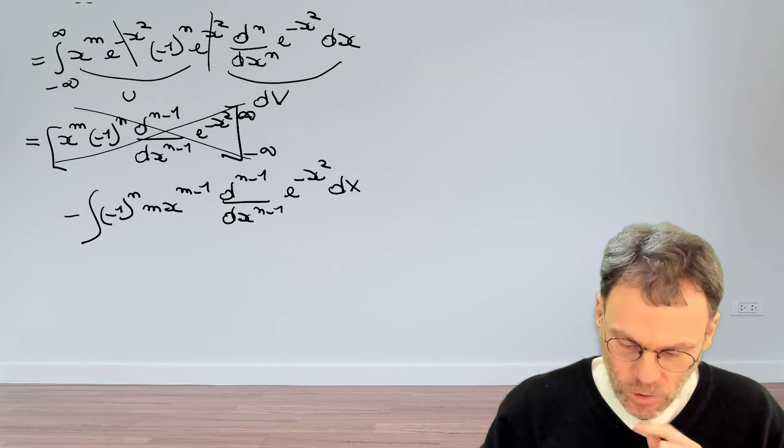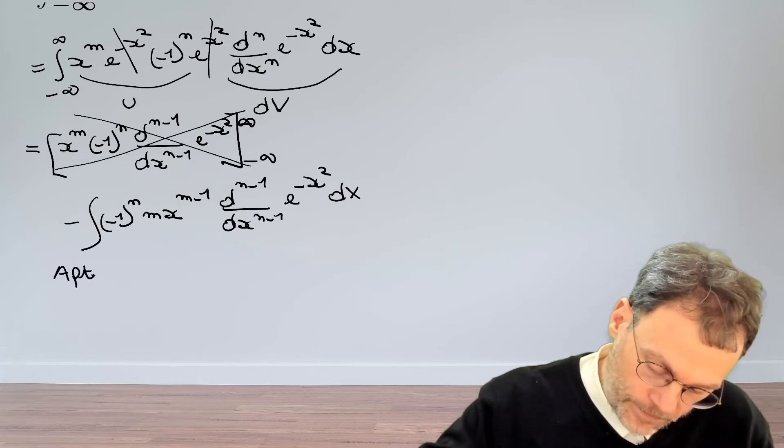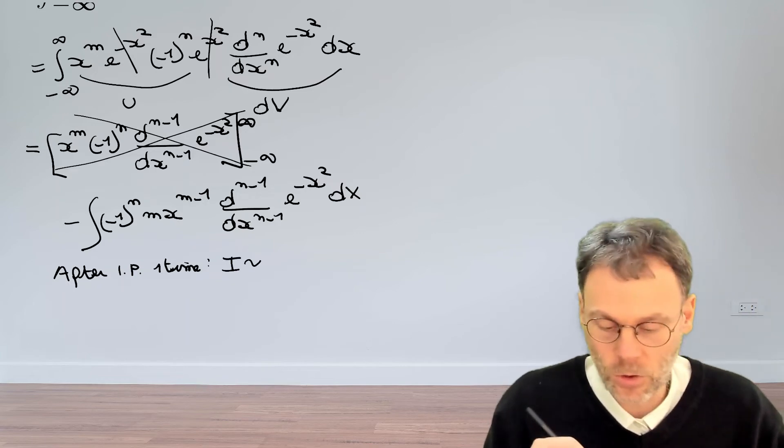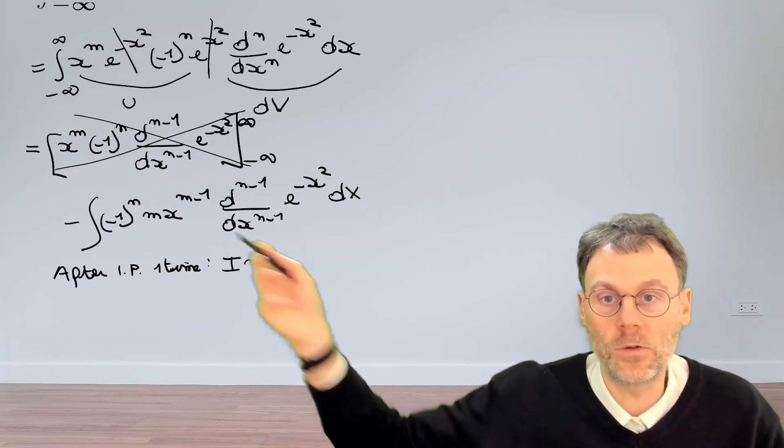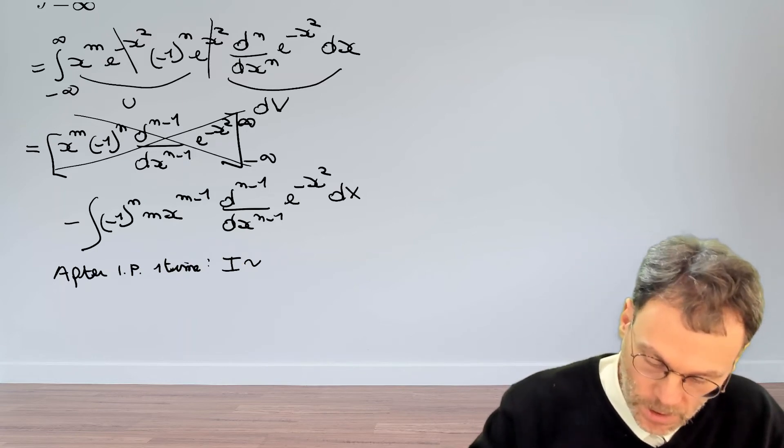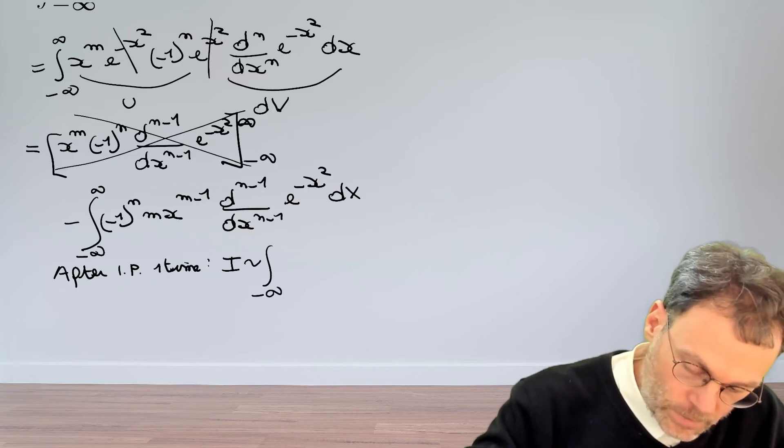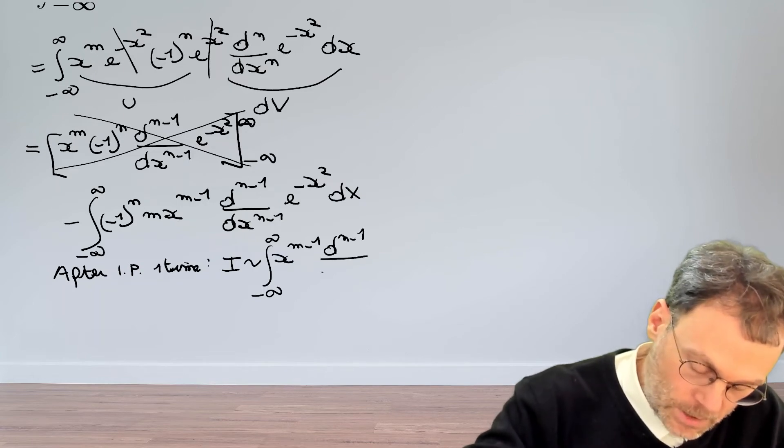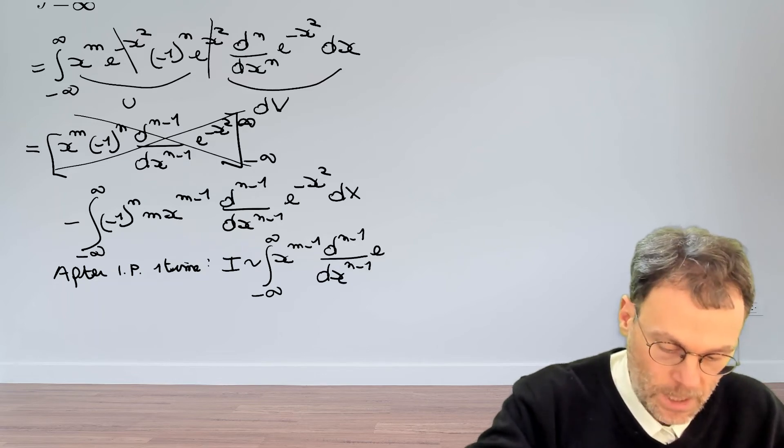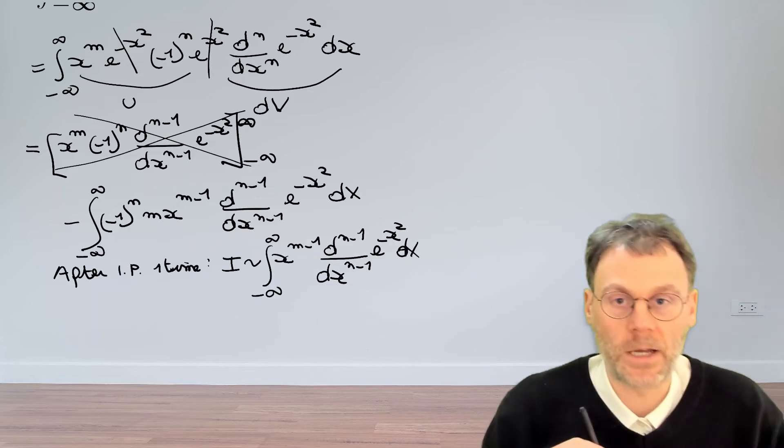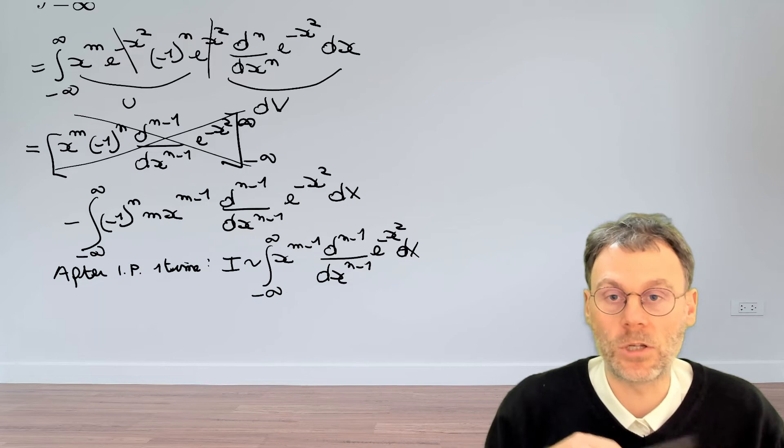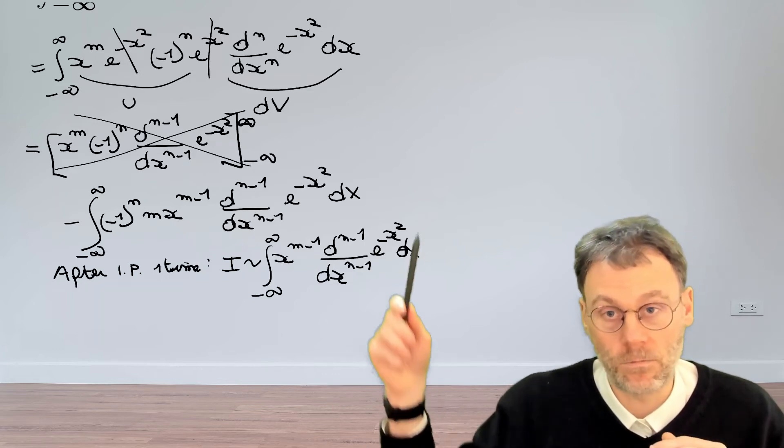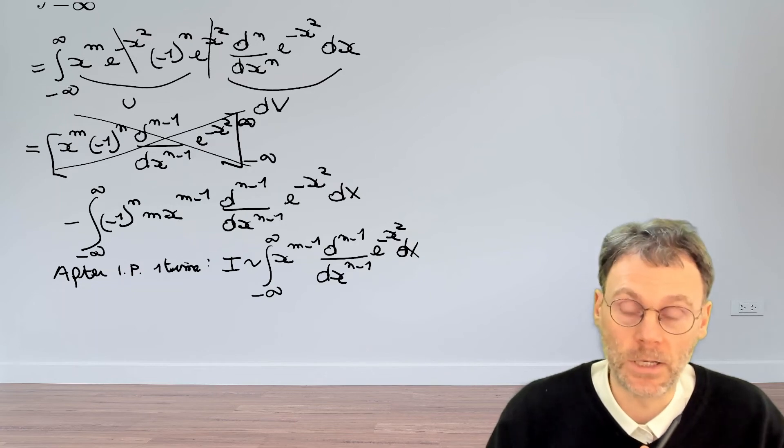Let's take stock. After we've applied integration by parts one time, we end up with an integral which is proportional to - and I'm not going to worry about these pre-factors here because we need to show that the result is zero. So let's forget about those. We have an integral proportional to minus infinity to plus infinity, x to the m minus 1, d n minus 1 dx n minus 1, exponential minus x squared dx. This is what we have after we apply integration by parts just one time. Now, pause the video and see what happens if you apply integration by parts more than one time and see if that helps you to show that this integral is indeed zero.